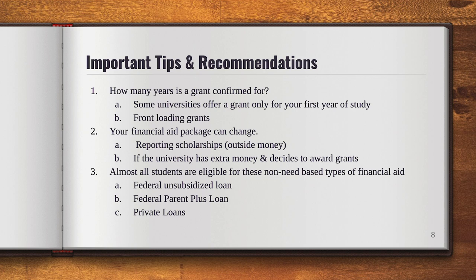Almost all students are eligible for non-need-based types of aid, such as the federal unsubsidized loan, the Parent PLUS loan (which is a loan for parents rather than students), and private loans from banks. If you feel your financial aid package still isn't enough to cover your cost of attendance, reach out to your financial aid office and ask about these non-need-based options. If you have any questions about your financial aid package, I highly recommend contacting the financial aid office at your school. We are also available to help — you can find our contact info at eaop.ucsd.edu. Thank you.